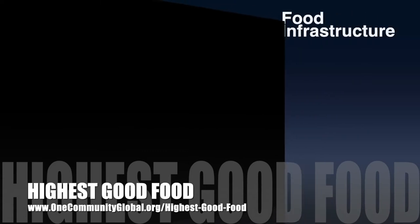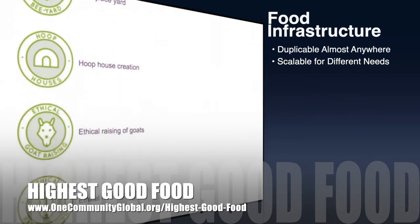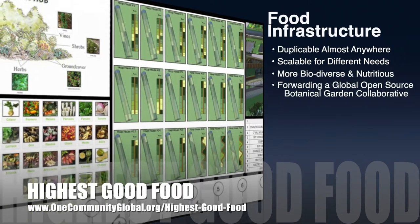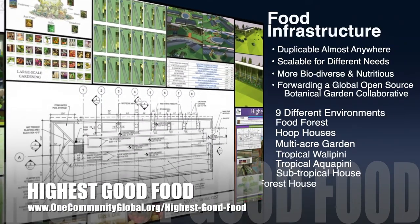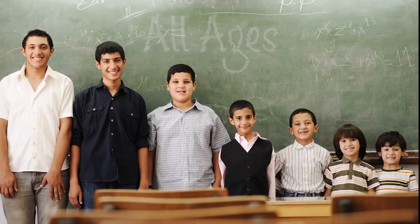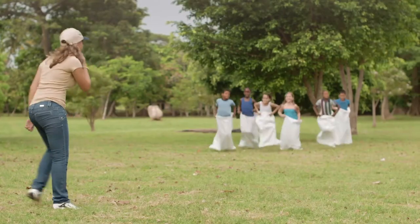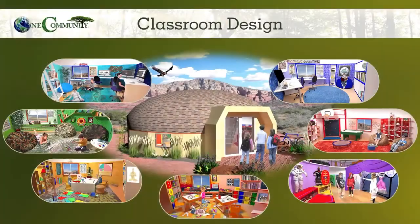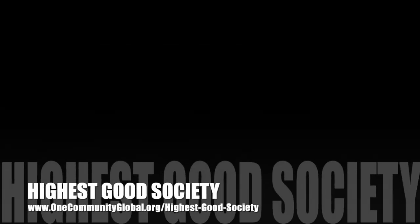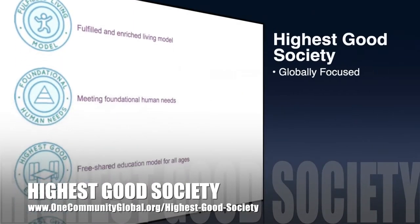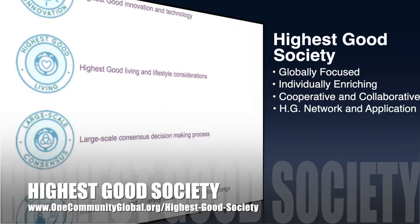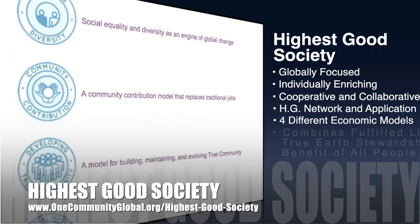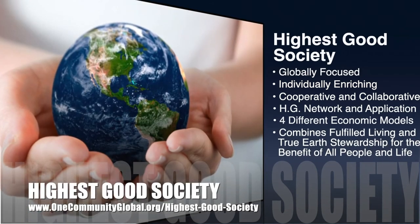One Community's approach to highest good food is duplicable almost anywhere, scalable for different needs, more biodiverse and nutritious, part of forwarding a global open source botanical garden collaborative, and includes nine different free shared and duplicable growing environments. The highest good education component is complete and nearly ready to launch once on the property — it is designed for all age groups, adaptable to any schooling environment, inspiring and fun, and includes national standards, all subjects, lesson plans, teaching and learning strategies, tools, classroom design, and more. The highest good society approach is globally focused, individually enriching, cooperative and collaborative, includes a highest good network and application, four different economic models, and combines fulfilled living and true earth stewardship for the benefit of all people and all life on this planet.